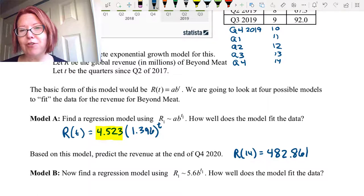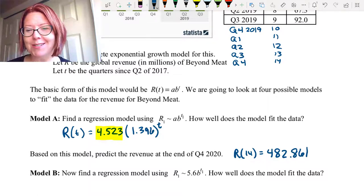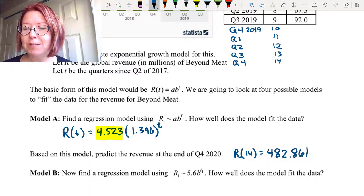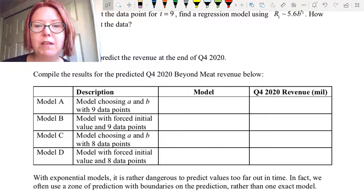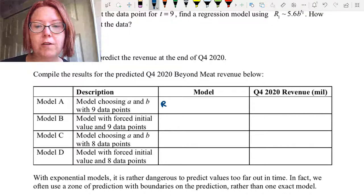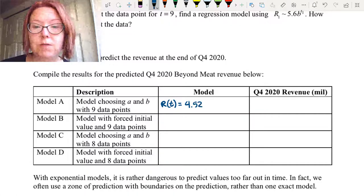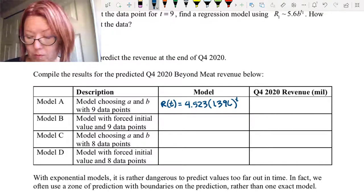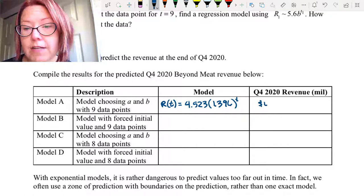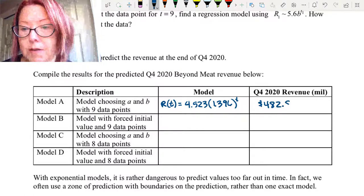Before we go any further, I know what's on the next page and we're going to want to compile this data. So let's go ahead and do that for this particular case. So for model A, we were choosing A and B and we used nine data points. Our model was R of t equals 4.523 left paren 1.396 right paren to the t power and our revenue was 482.86 million.